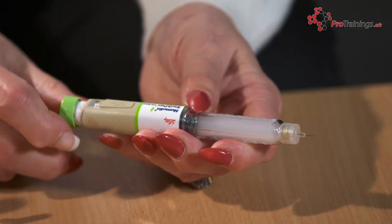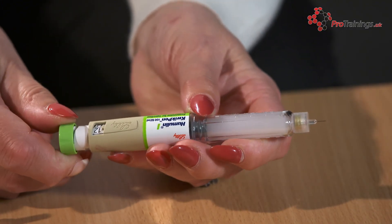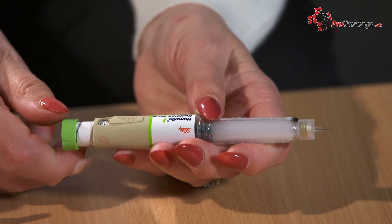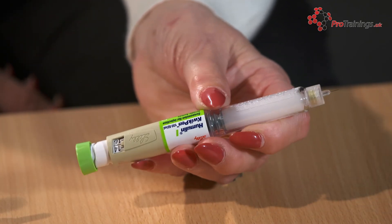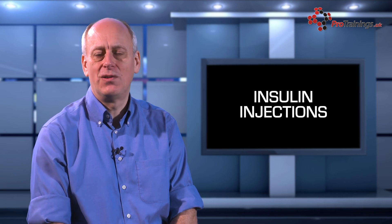Those with type 1 diabetes have to have their blood glucose levels monitored by either a GP or diabetes care team member periodically. This is to see if the levels of insulin injected are correct or they need to be changed.